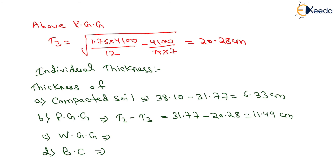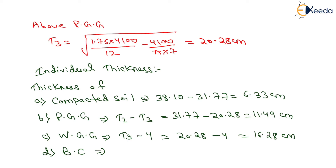The thickness of well graded gravel equals T3 minus the thickness of the bituminous layer (4 cm), which gives 20.28 minus 4 = 16.28 cm. The bituminous layer thickness is already given as 4 cm.